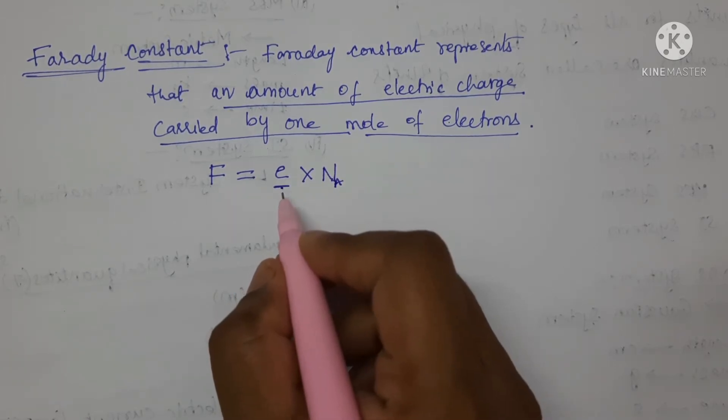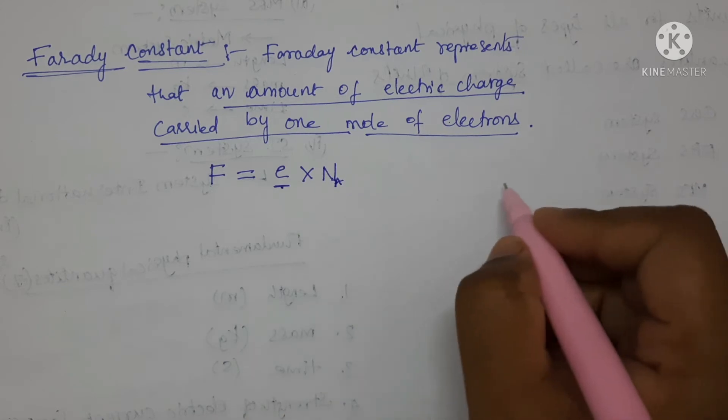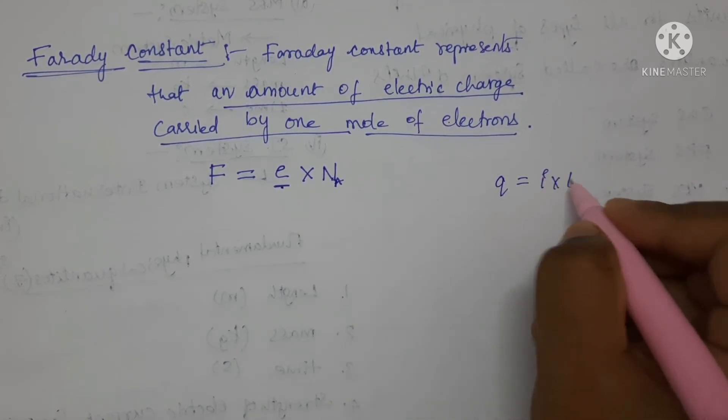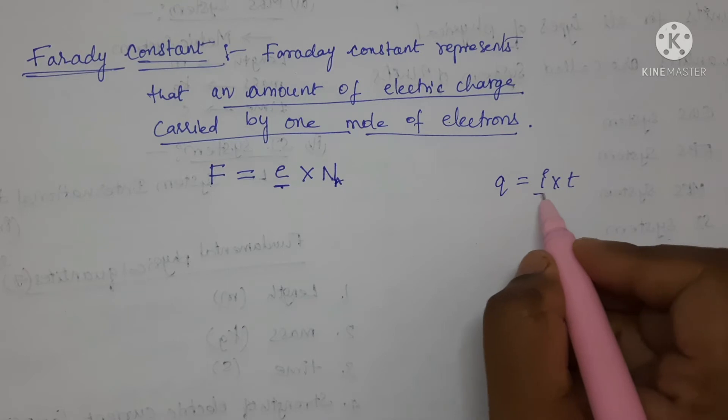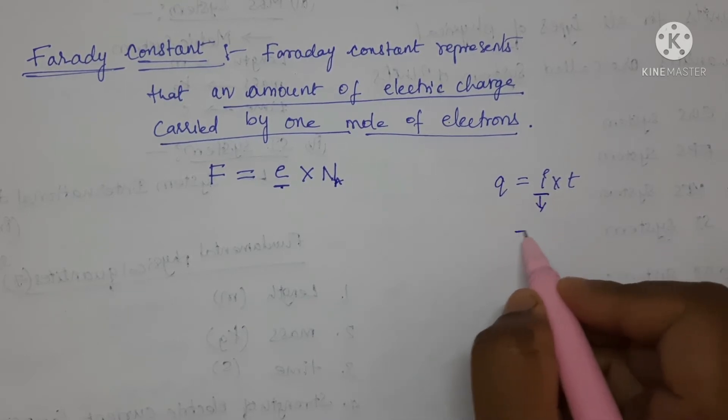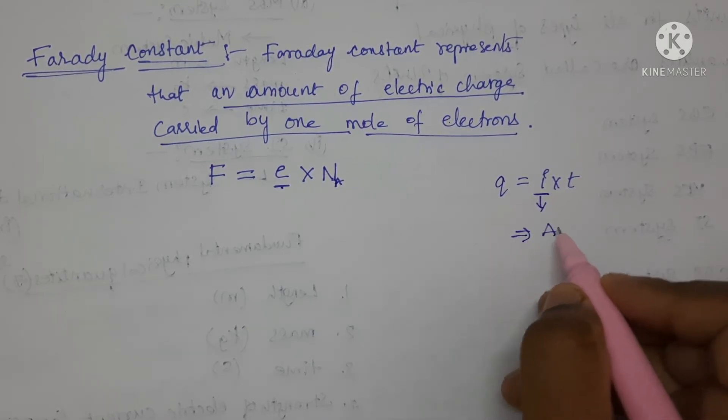Let us find the dimensions of the charge. We know that charge is equal to current multiplied by time. Charge is expressed in terms of capital A and time is expressed in terms of capital T.